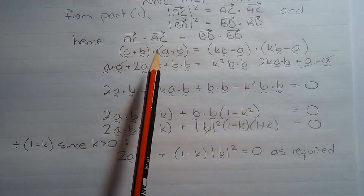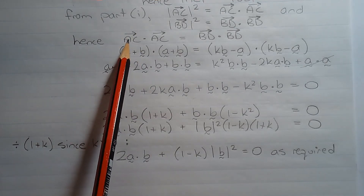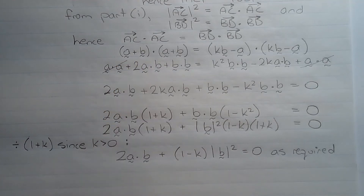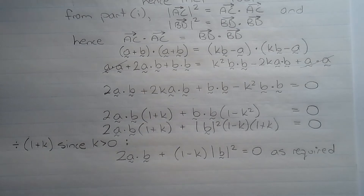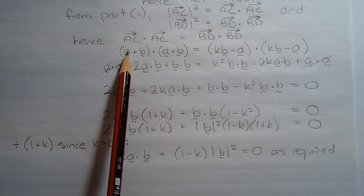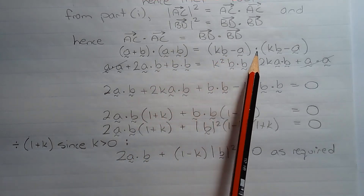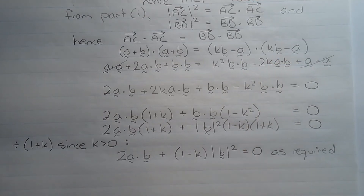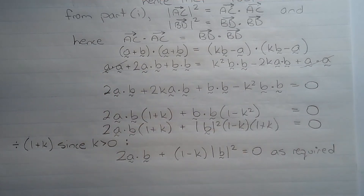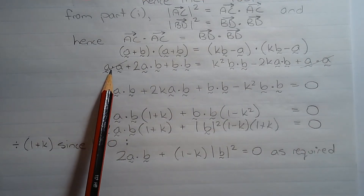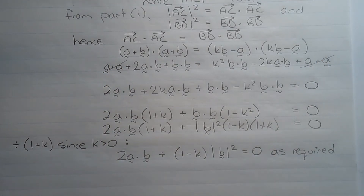From this equation we can form an alternative equation using lower case notation. So vector AC is vector a plus vector b, and vector BD is K times vector b minus vector a. So we have the dot product of (a + b) with (a + b) equal to the dot product of (Kb − a) with (Kb − a). Expanding the brackets, you can see that the dot product of vector a and vector a appears on both the left-hand side and the right-hand side, and that can be cancelled.